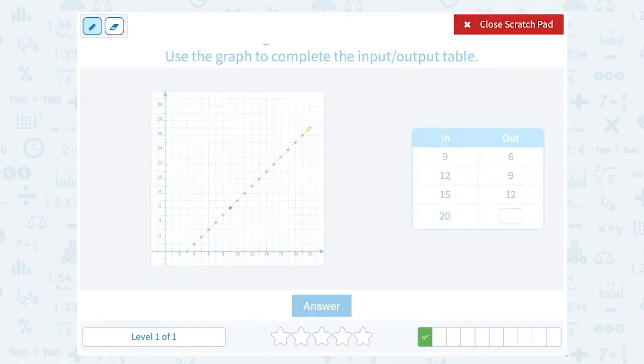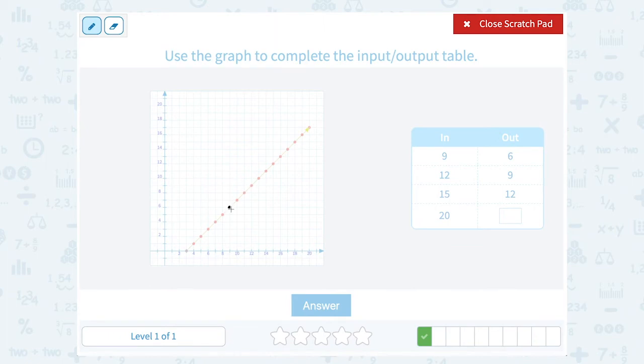Okay, we're going to do the same thing. Use the graph to complete the input-output table. So notice these are ordered pairs. For example, 9, 6 is telling me 9 to the right and up 6. That would be my point right here.